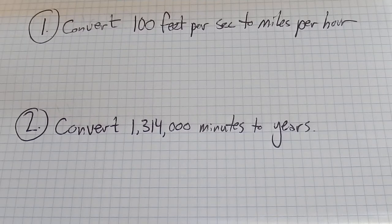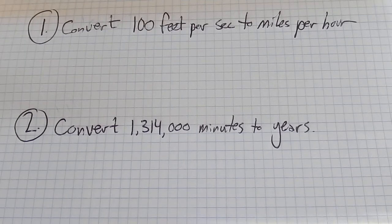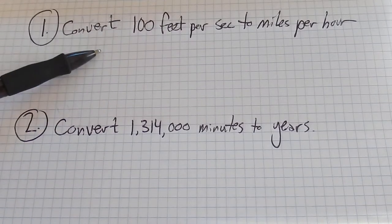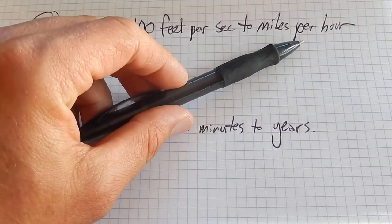This is Math 98, Practice Test 1, and these questions are 1 and 2. Notice on the first question, we need to convert 100 feet per second into miles per hour.